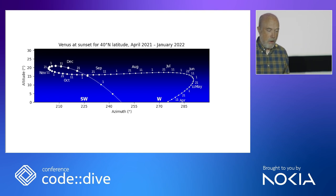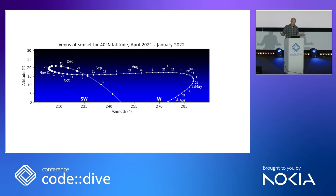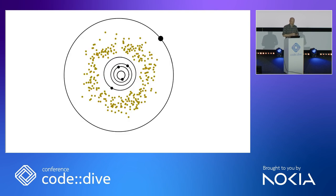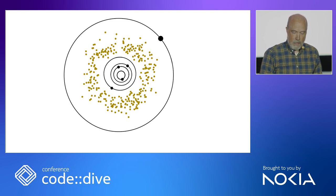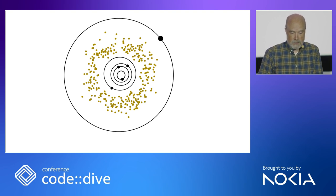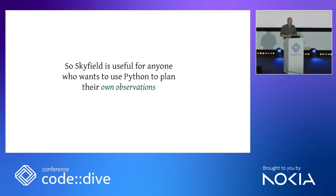You can draw diagrams of the evening sky showing the months over which Venus will be visible and where along the horizon it will appear. This is a diagram of where the inner planets are right now, at the time of this talk, with some of the asteroids and with Jupiter in the next orbit out. The current theory is that the perturbation of Jupiter's gravity is what prevented a fifth rocky planet from ever forming, and instead kept a field of asteroids floating in space between them. So Skyfield generates coordinates useful for anyone who wants to plan their own observations.